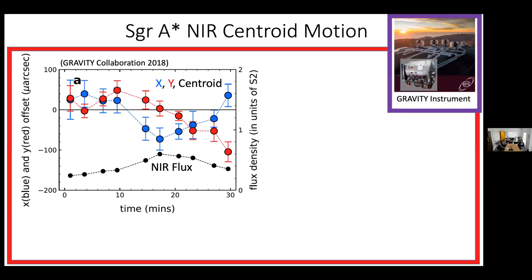In the data, the black line shows near-infrared flux with a peak around one time period. The blue and red lines are the offset from the mean centroid position in X and Y — the centroid in the plane of the sky. The field of view is about 300 micro arc seconds, and the centroid moves about 150 micro arc seconds on the sky.